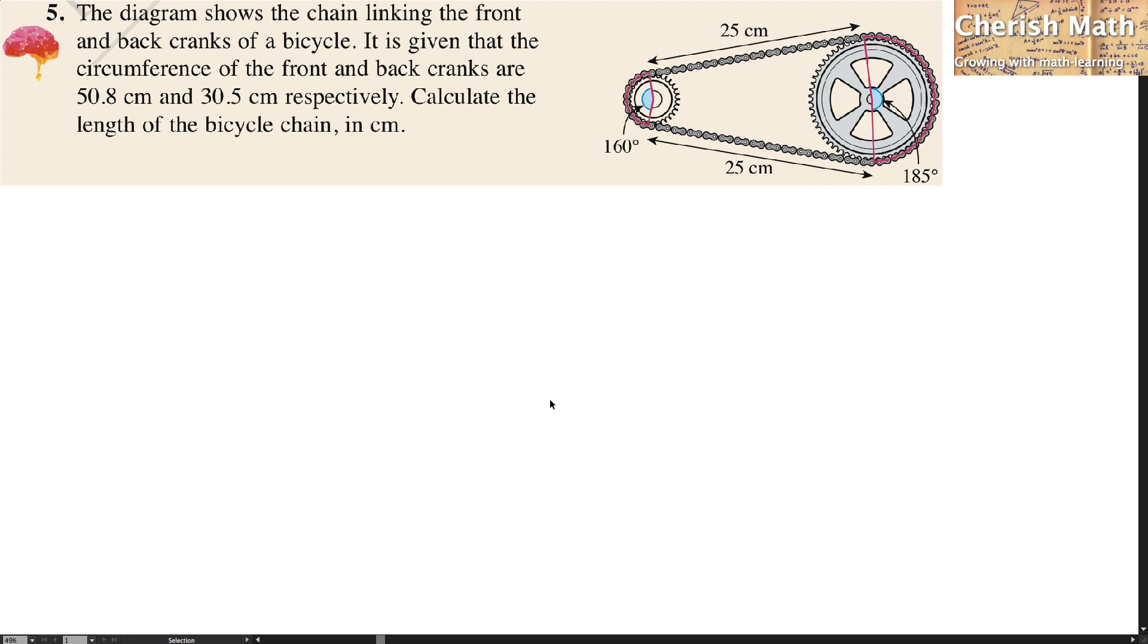Let the radius of the small crank be R1. I'm going to work out the value of this R1. 2π R1 equals 30.5, so the value of R1 is 4.85 cm.